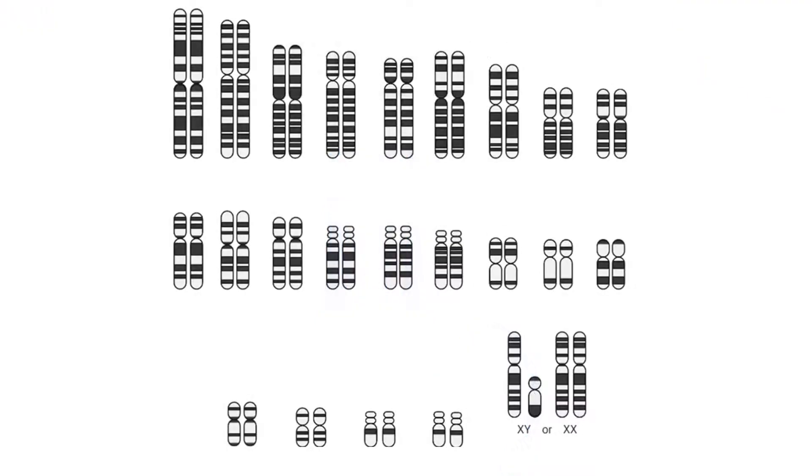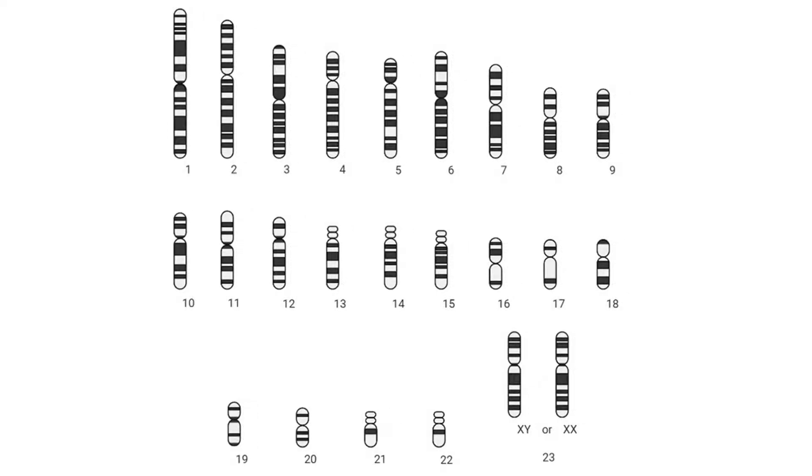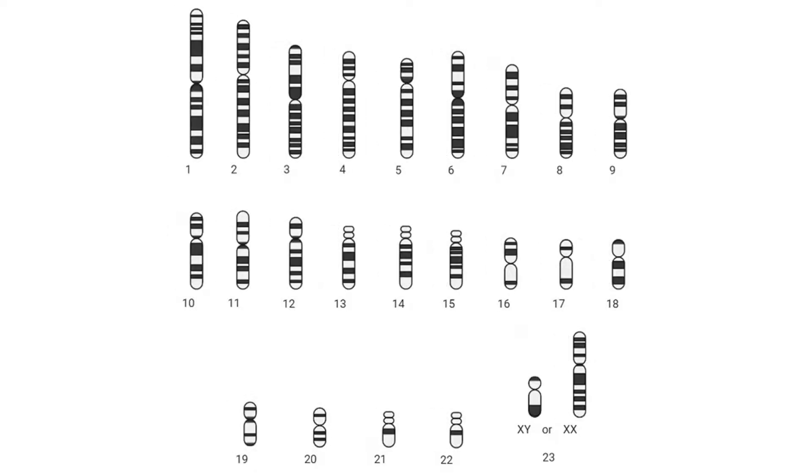Normally, almost all the cells in our human bodies have 46 chromosomes. Well, to be more precise, we have 23 pairs of chromosomes. We get half of our chromosomes from our biological mother and the other half from our biological father.